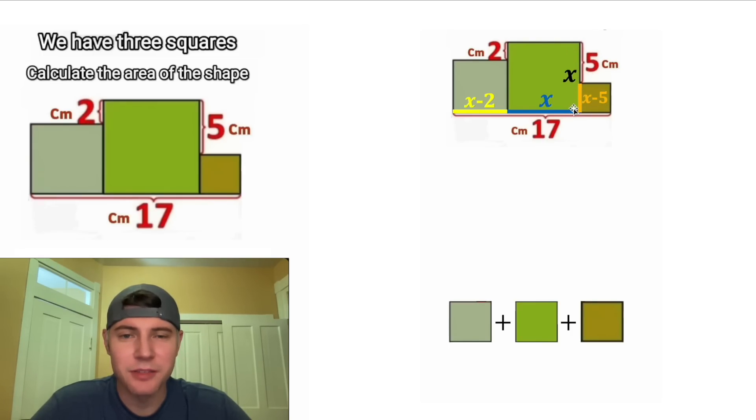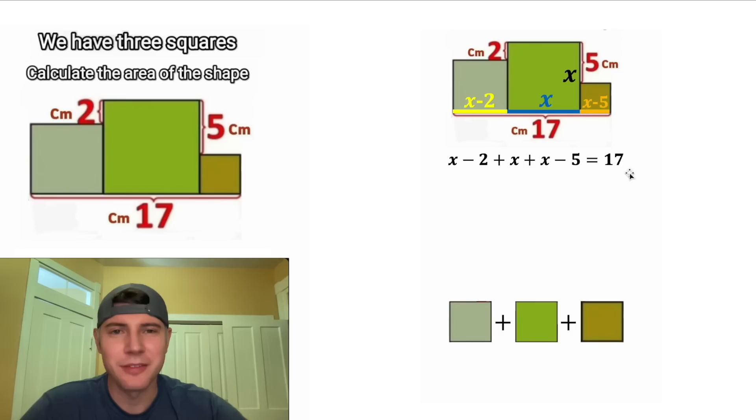that leaves x minus 5 for this piece. And then once again, it's a square, so the base is going to match the height. So this orange portion is x minus 5. Now we know that the yellow plus the blue plus the orange will equal 17. So we have x minus 2 plus x plus x minus 5 equals 17.